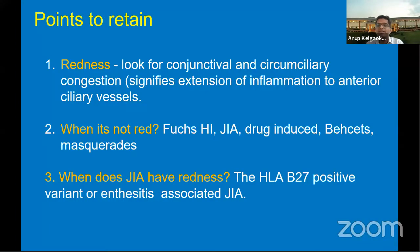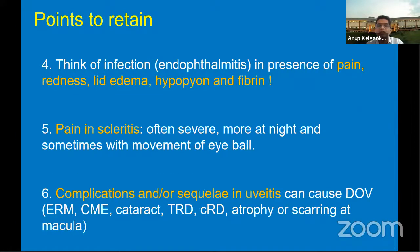To summarize: redness is by far the most common symptom in uveitis, but it is not always present. White-eye uveitides include Fuchs' uveitis syndrome, JIA, drug-induced uveitis, vasculitis, and masquerades. The enthesitis-associated JIA or HLA-B27-positive variant can have redness. Think of infection or endophthalmitis in the presence of pain, redness, lid edema, hypopyon, and fibrin. Pain in scleritis is often severe, worse at night, and may be associated with eye movements. Complications in cicatricial uveitis are a major cause of vision loss even after uveitis resolution.